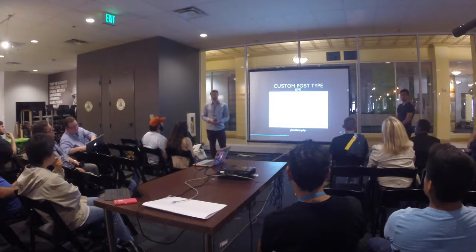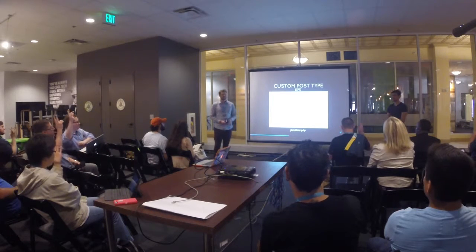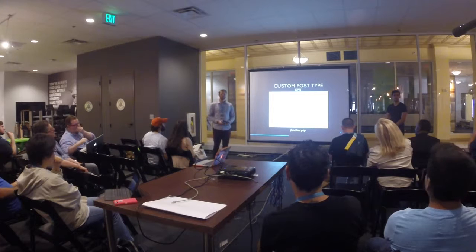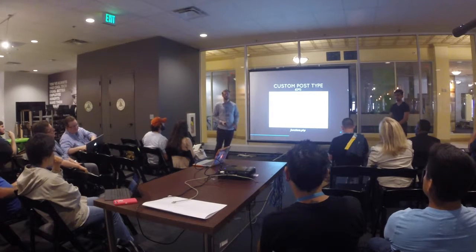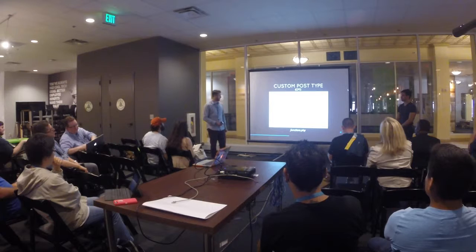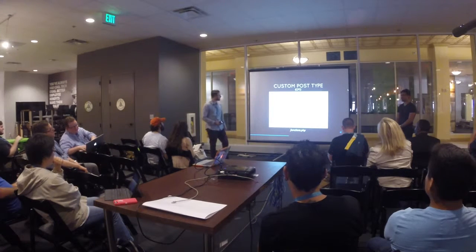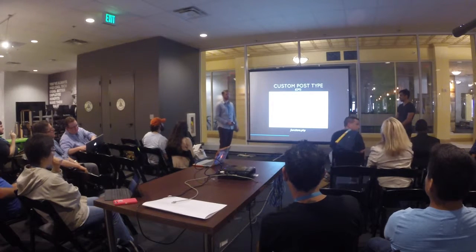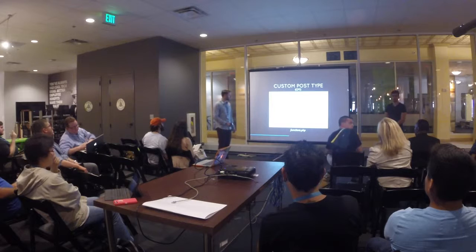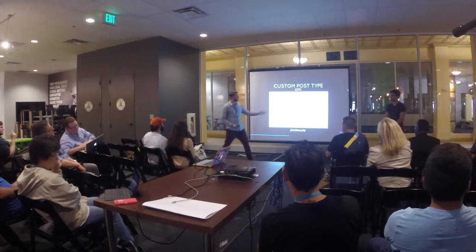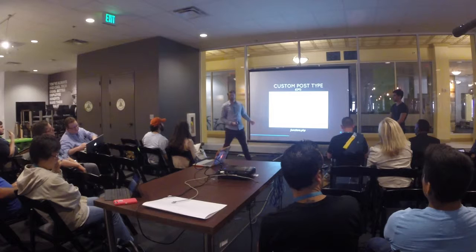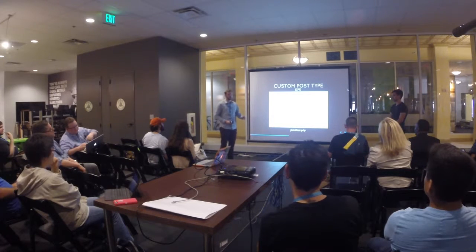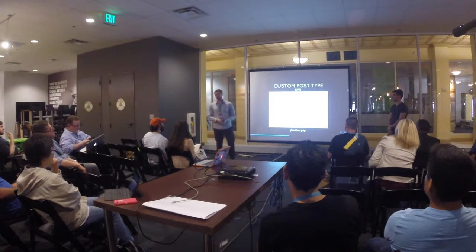In your functions.php — and if you've used WordPress you've had to add something to this file — this is how you make a custom post type. For ours, we just had to tell it what a Patronus is. After doing this, a Patronus item will show up on your sidebar in the WordPress admin.